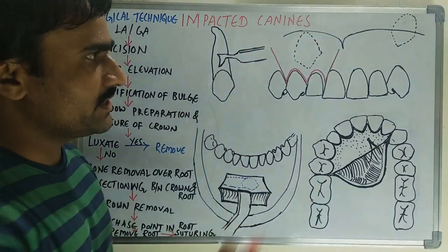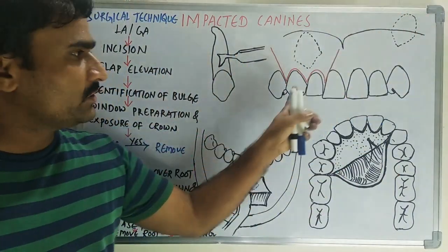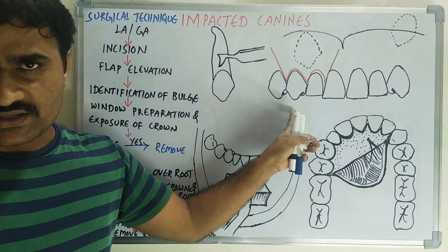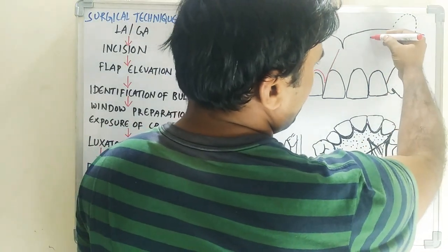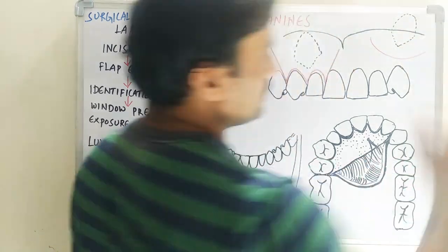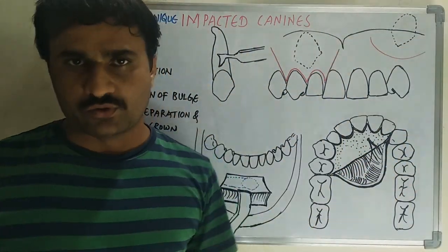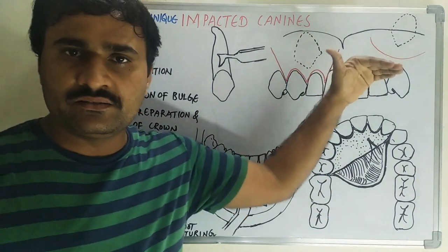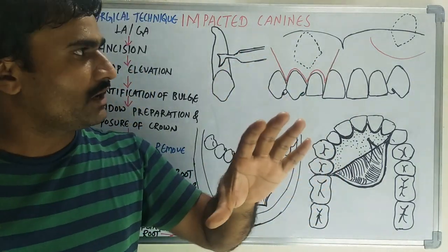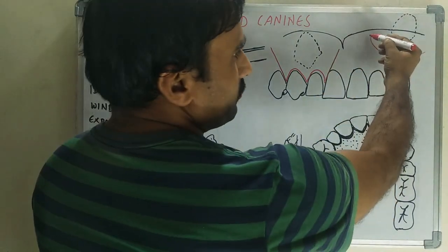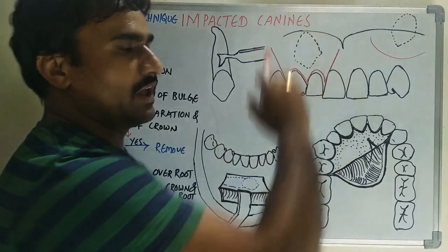When the canine is located high in the buccal vestibule, there is no need for crevicular incisions. Instead, you take a semilunar incision in the buccal vestibule. You must maintain the attached gingiva, then take the semilunar incision in the buccal vestibule and elevate the flap.